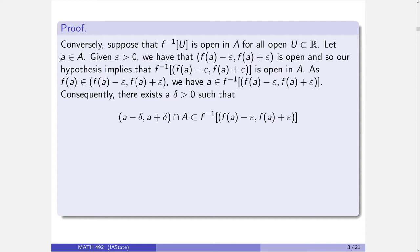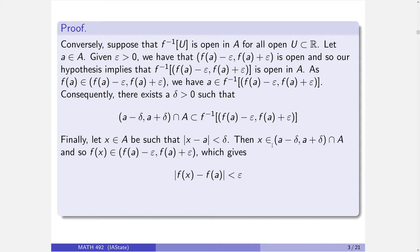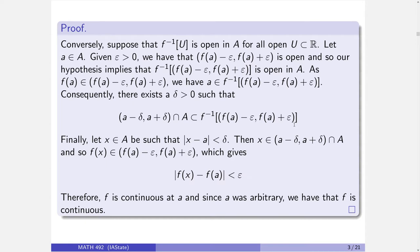Well, let's think about something that would live in this set. Spoilers — A lives in this set, because f(A) is obviously in this interval; it's the midpoint of this interval, even. So A lives in the inverse image of this. Since this is open in A, there is a delta so that this set remains inside here. So I've got my epsilon, I've got my delta. Now I just need to demonstrate that the continuity is occurring at A.